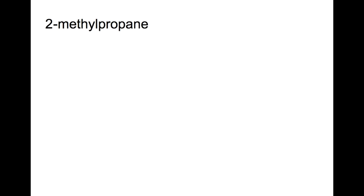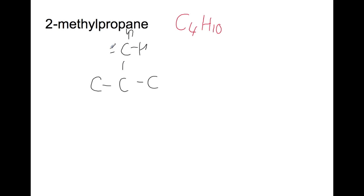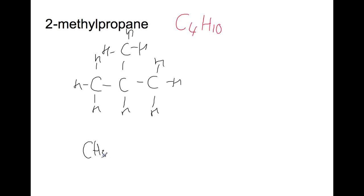You should be able to do this for branched molecules as well. 2-methylcyclopropane has four carbons and ten hydrogens. To draw it, start from the end of the name — propane has a backbone of three carbons, and on the second carbon we have a methyl group. For the shortened structural formula: CH3, then CH with a branch of CH3 in brackets, then our final CH2.